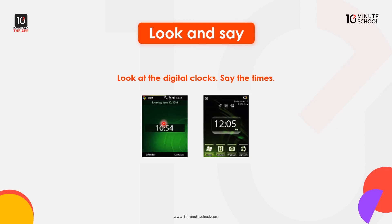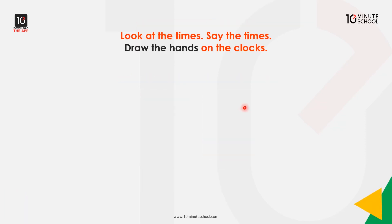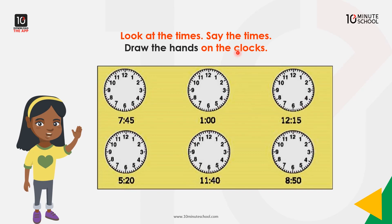One clock shows 10:54 and another clock shows 12:05. Look at the times and say the times. Draw the hands on the clocks. The clock is 7:45 — that is 45 minutes past 7, or quarter to 8.